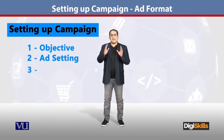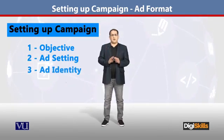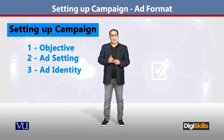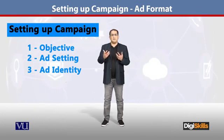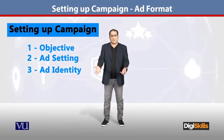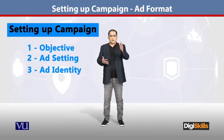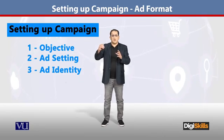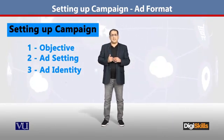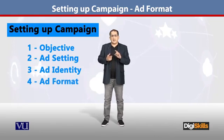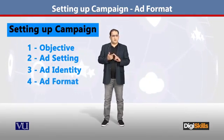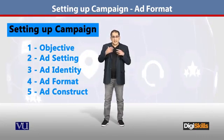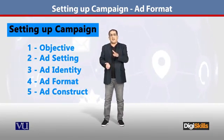That was the identity part of your Facebook ad. What comes next is very critical. Now we are going to the ad side. The first thing is the identity of the ad, which is the link of the Facebook page. Now the rest of the two sections — one is formatting, which will be our ad, and then we will be telling the link of the ad. That is the construct of the ad.